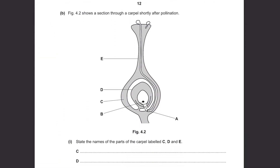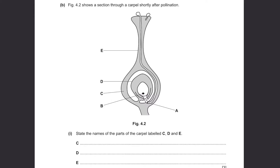Part B. Figure 4.2 shows a section through a carpel shortly after pollination. State the names of parts C, D, and E. C is the ovary, D is the ovule surrounded by the ovary wall, and E is called the style — the passageway.